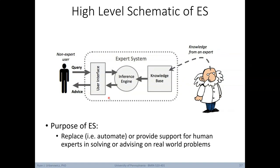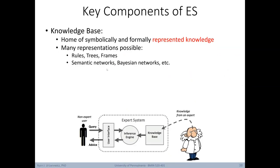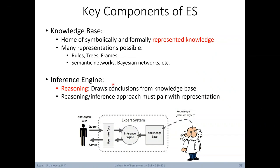Here is a high-level schematic of an expert system. A non-expert user can query the system and get advice back. The knowledge base has been assembled based on knowledge from human experts. The purpose of an expert system is to replace, automate, or provide support for human experts in solving real-world problems. The two main components are the knowledge base — the home of symbolically represented knowledge — and the inference engine, responsible for drawing conclusions from the knowledge base. Critically, the reasoning approach must pair with the representation being used.